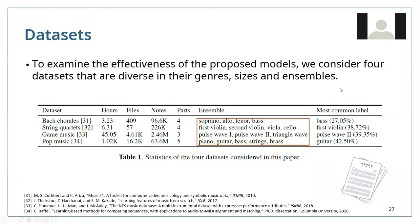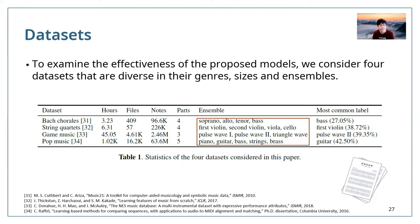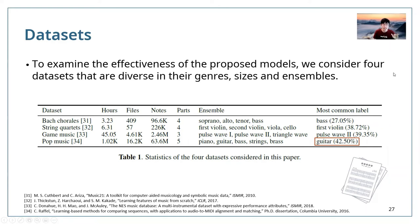Bach chorales is a choir with soprano, alto, tenor, and bass. String quartets have two violins, one viola, and one cello. Game music has three synthesizers: two pulse wave generators and one triangle wave. Pop music uses the five most common instruments: piano, guitar, bass, strings, and brass. Notably, guitar represents 42% of the labels in pop music, so always predicting guitar gives 42.5% accuracy — any model should always exceed this baseline.